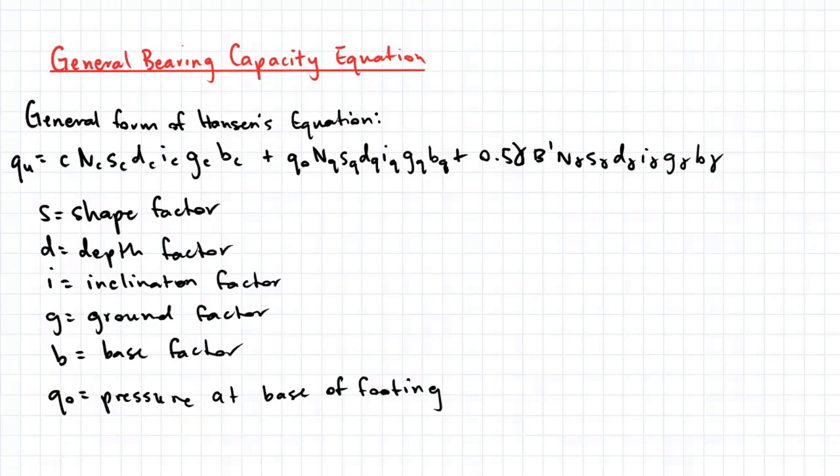This general equation is known as Hansen's equation and is shown here. The equation has quite a few factors applied to it, as you can see here.